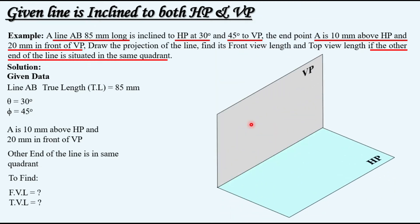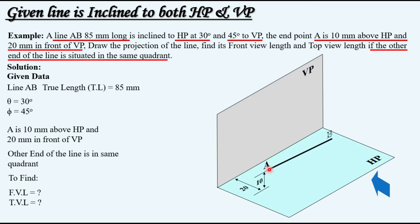Let's understand the question using a 3D model. We have horizontal and vertical planes, and we are looking from a specific direction. As per the given data, A is located 20 mm in front and 10 mm above HP. The line makes an angle theta with the horizontal plane and an angle phi of 45 degrees with the vertical plane. If we obtain the front view, we get points A-dash and B-dash, and the line joining them is our front view. The length of the front view will not be the true length but a reduced length, because the line has an inclination with the vertical plane.